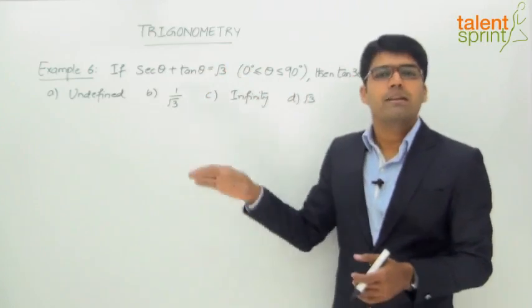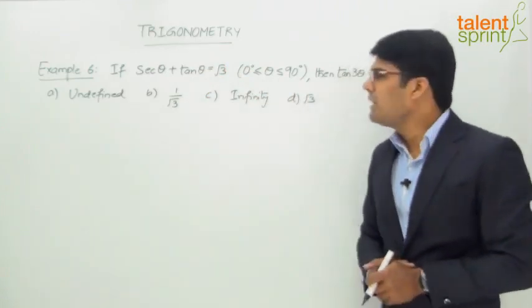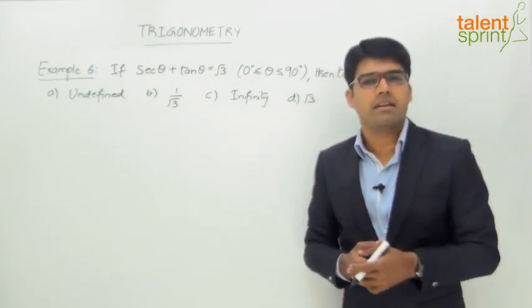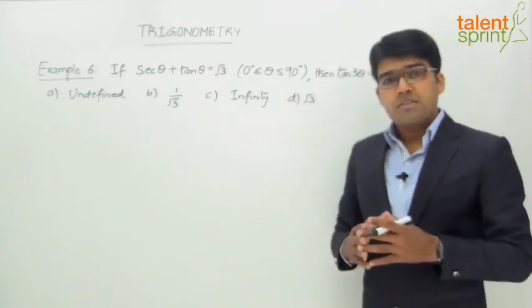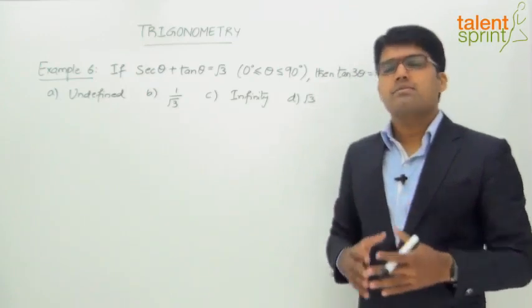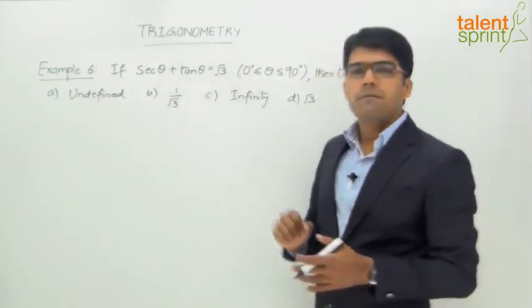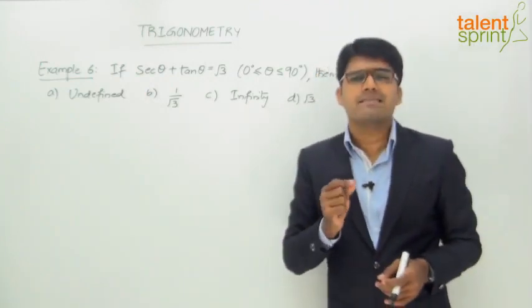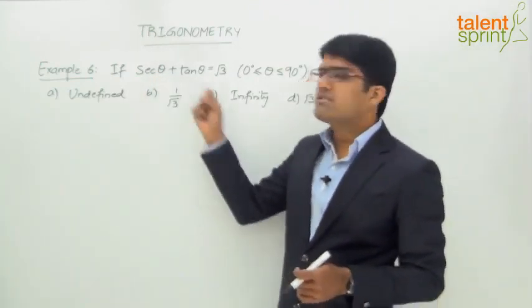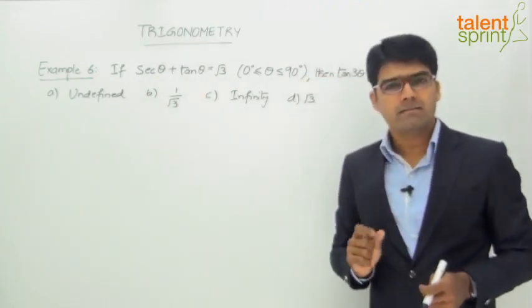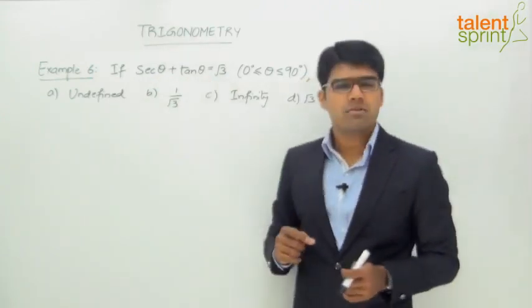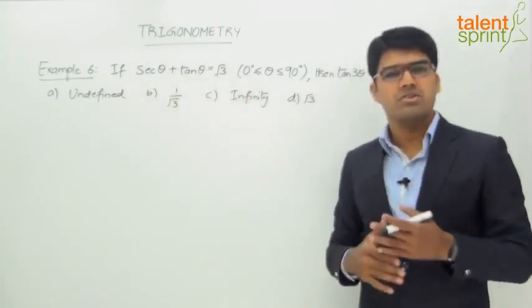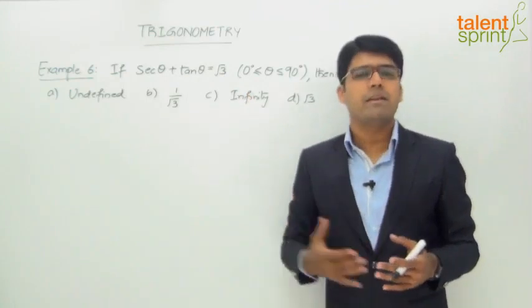Let's try the smart method. We start with θ = 0°. Secant 0° is 1 and tan 0° is 0, so 1 + 0 = 1, but we need √3. So θ = 0° is not possible.